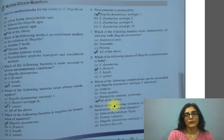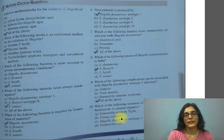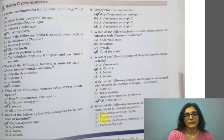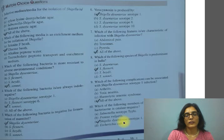Question 10: which of the following members of the family Enterobacteriaceae is catalase negative? A) Salmonella serotype Typhi, B) Proteus vulgaris, C) Shigella dysenteriae serotype 1, D) Escherichia coli. The correct answer is C, Shigella dysenteriae serotype 1, which is catalase negative. All the other three are catalase positive.